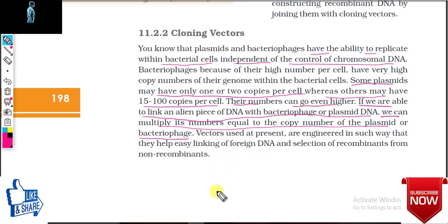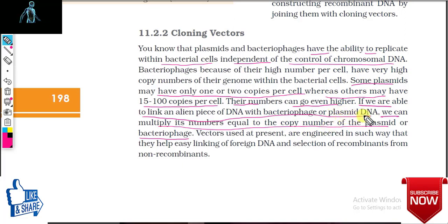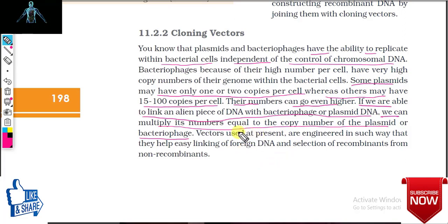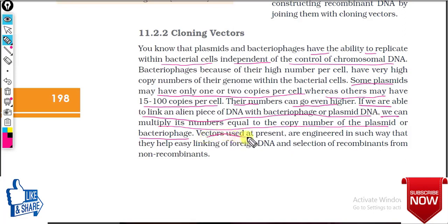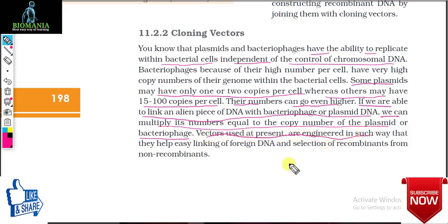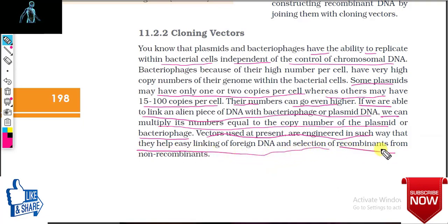If we are able to link an alien piece of DNA with bacteriophages or plasmid DNA, we can multiply its number equally to the copy number of the plasmid or bacteriophages. Vectors used at present are engineered in such a way that they help easy linking of foreign DNA and selection of recombinants from non-recombinants.